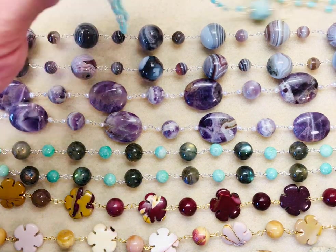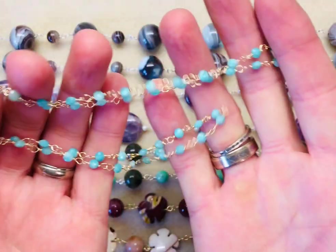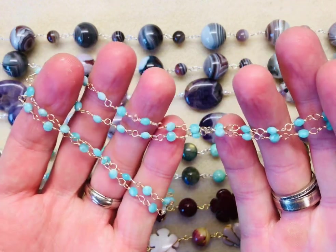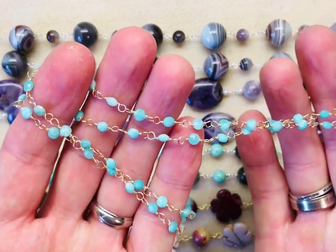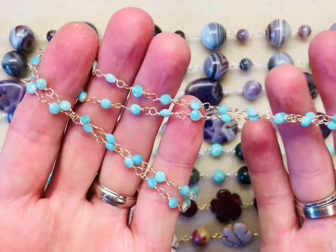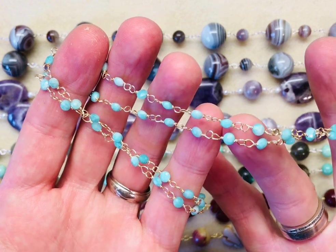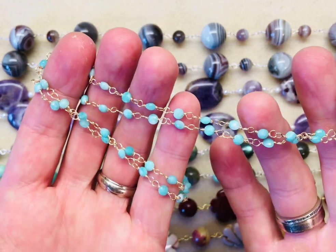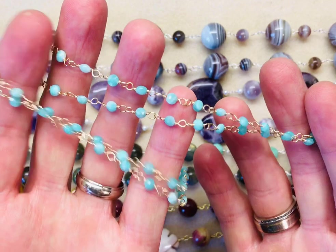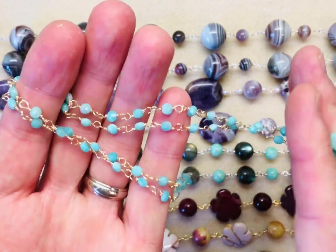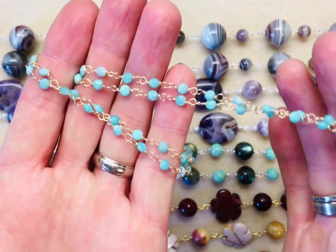So if I start from the top here, this is one of my most delicate pieces using Amazonite pips. Because the drill holes are so small I've had to use 0.4 millimeter wire to do my rosary linking with. It's still very strong so don't be put off by its delicateness. So that's using tiny little pips.